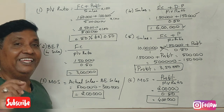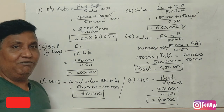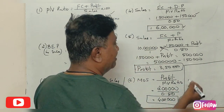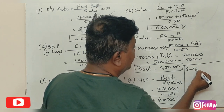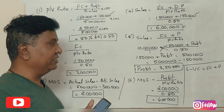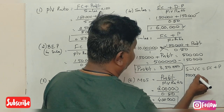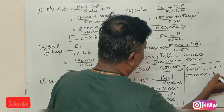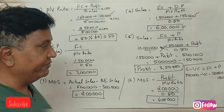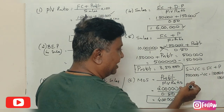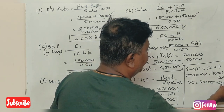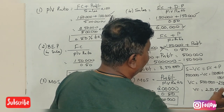To calculate variable cost, use the formula: sales minus variable cost equals fixed cost plus profit. Variable cost is therefore equal to 2 lakh rupees.